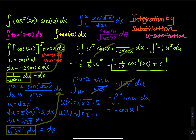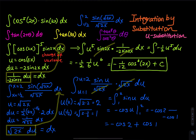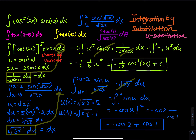For a definite integral, we do not substitute back to x. We just apply the Fundamental Theorem of Calculus: the result is negative cosine of 2 minus (negative cosine of 1), which equals negative cosine 2 plus cosine 1. There is no plus C because this is a definite integral. Report the exact answer — no decimals.